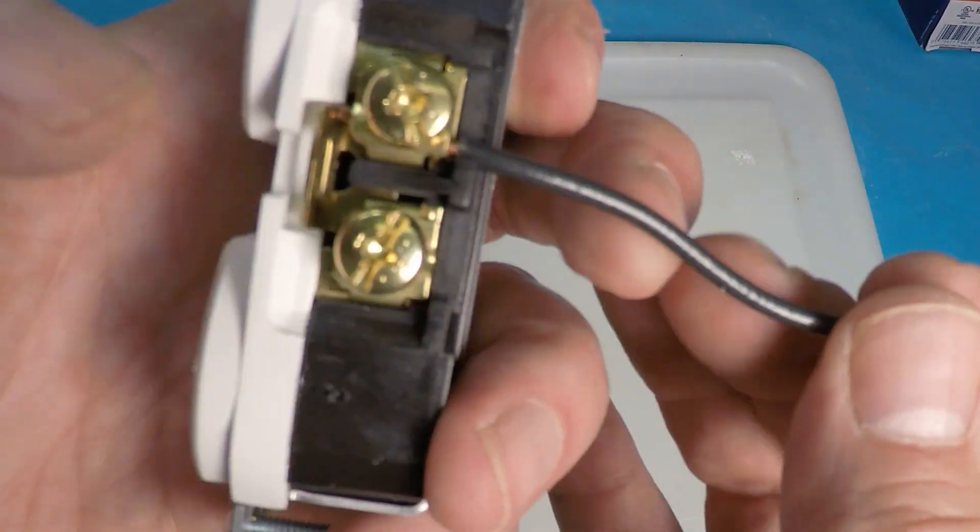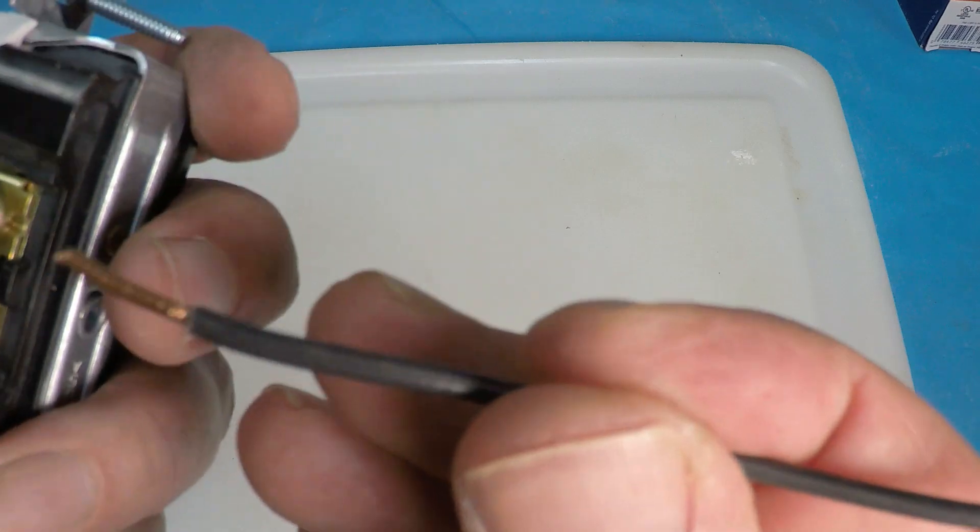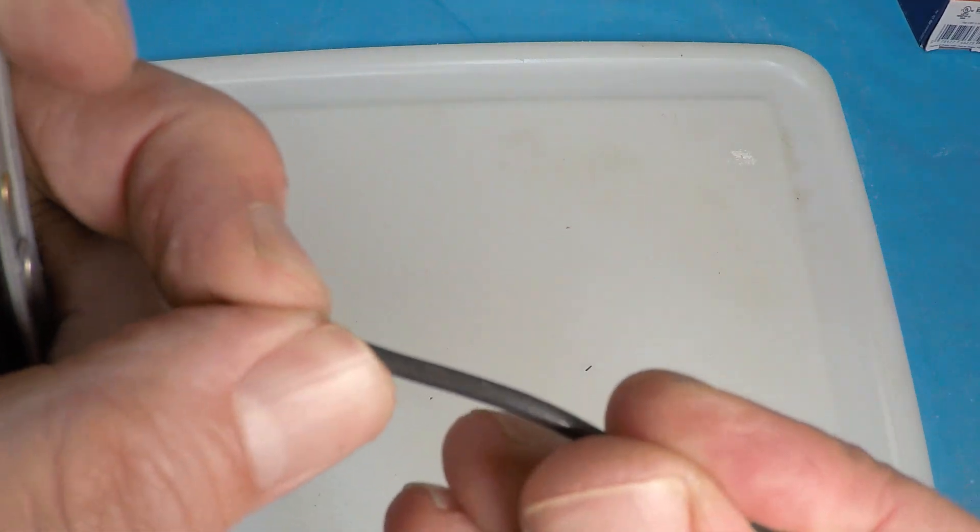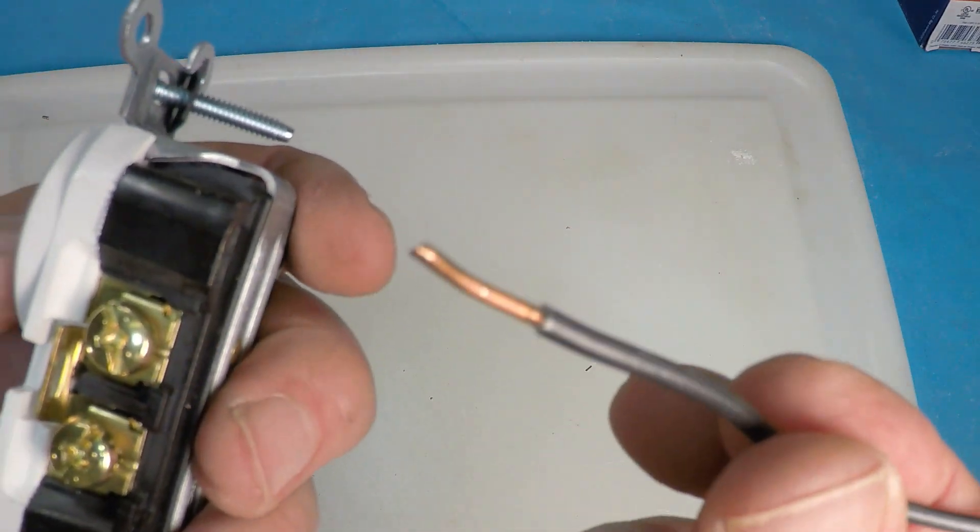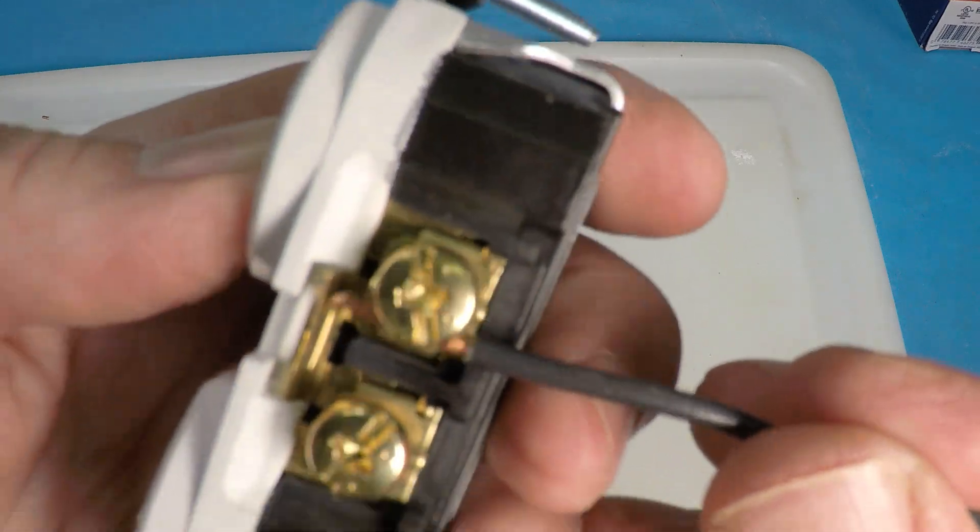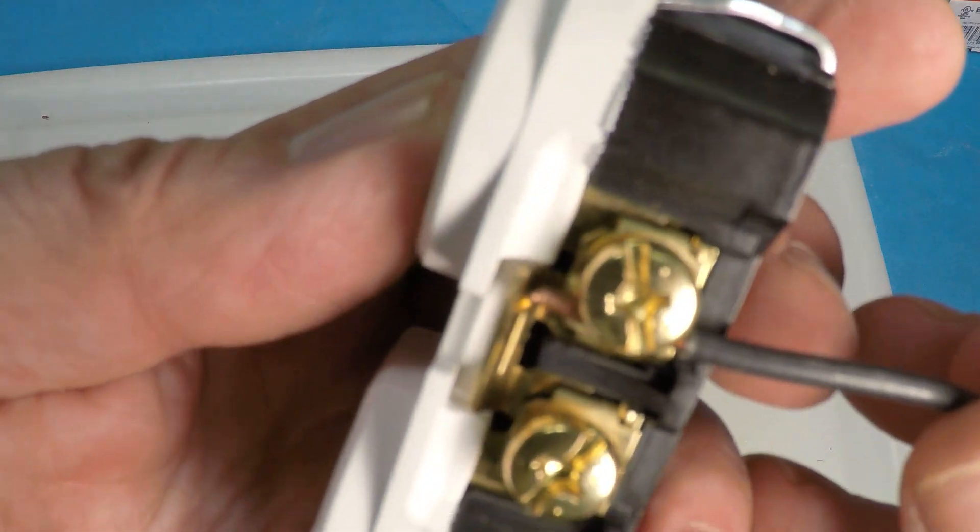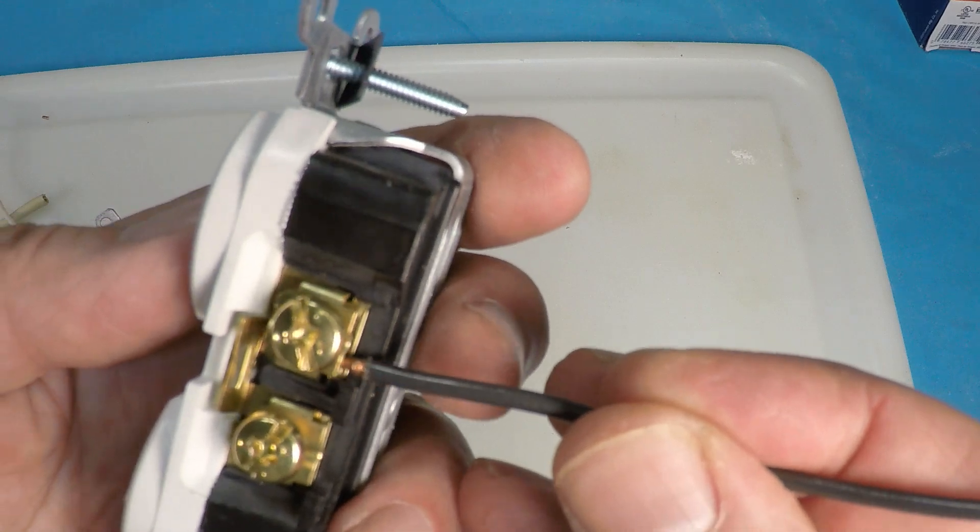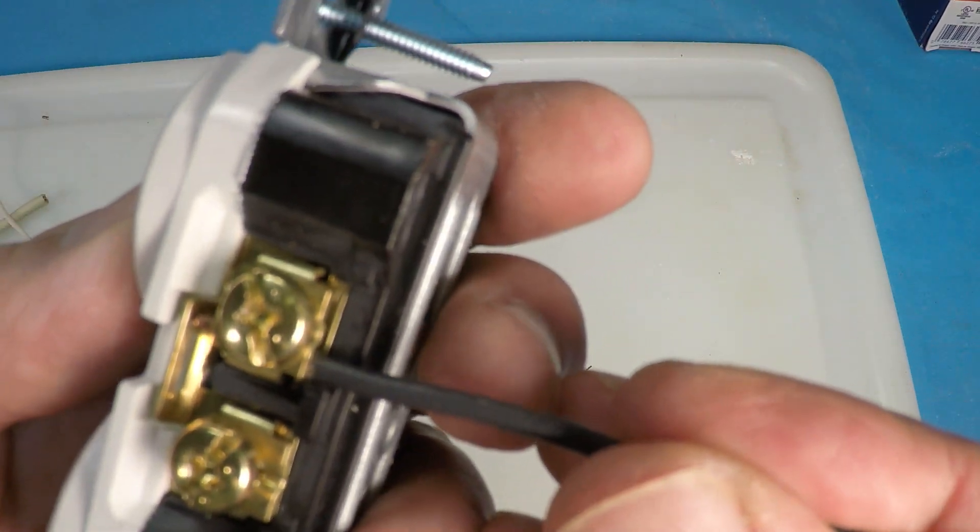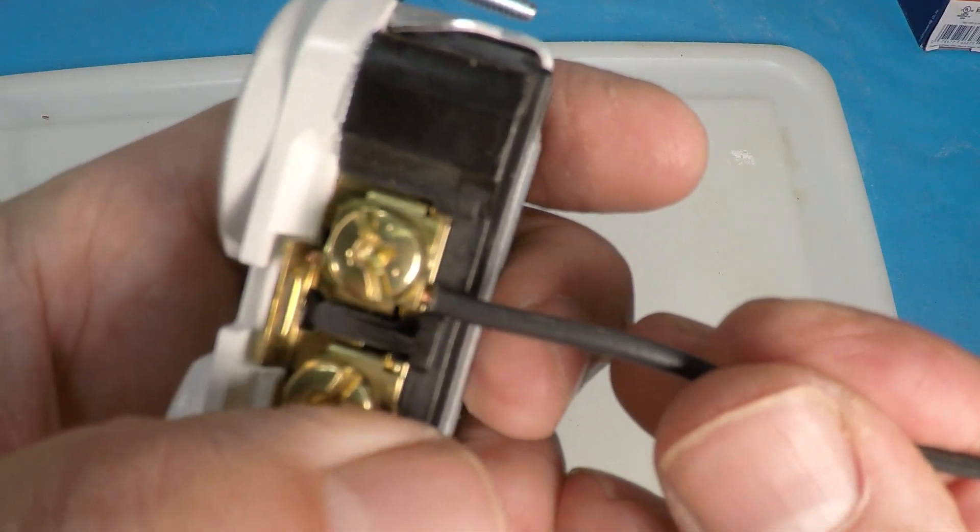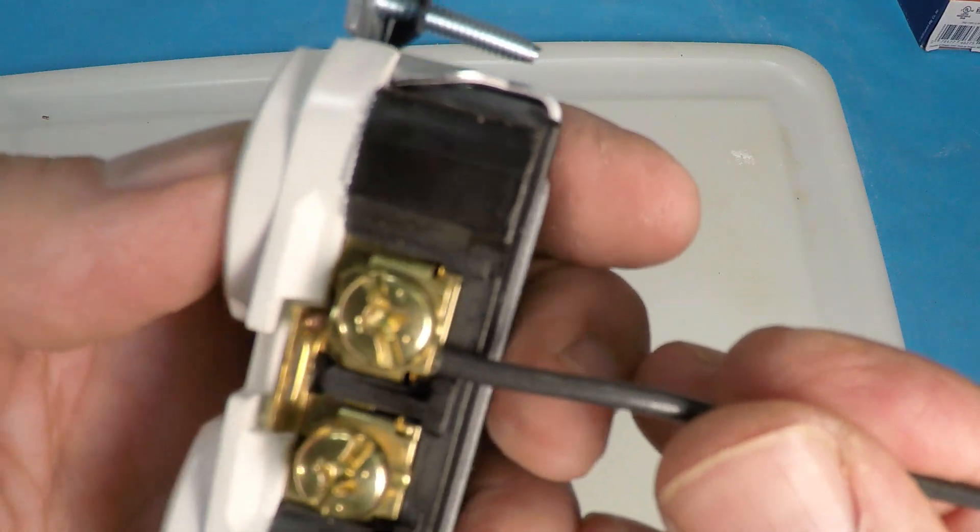And that is much better for multiple reasons. First, you don't have to worry about J-hooking this and potentially making it too long or too short. The only thing you're going to do is watch the total length and make sure it's at the right length. You don't want to have the insulation underneath here and you want to have just a little bit of copper showing.